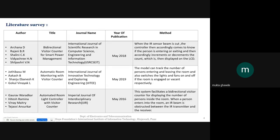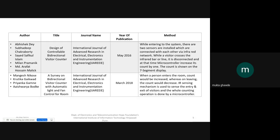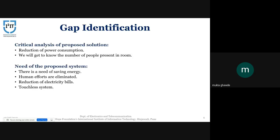These are some of the literature surveys we have done related to our project. Moving on to gap identification: in schools and colleges, students and staff often forget to switch off the lights before leaving the room, causing more power consumption. Our project addresses this. In auditoriums, we will also be able to know the number of people entering and attending the session, as the LCD is used to display the count.